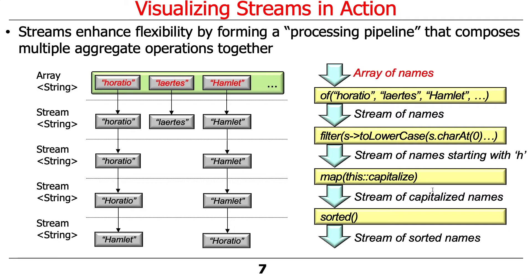The first thing we're going to do is get an array of names — Horatio, Laertes, Hamlet, and so on. Then we're going to apply the `of` operator to that array of names, and what that will do is create a stream of names. So what comes out of `of` is a stream of names, and you can see that they're inconsistently capitalized.